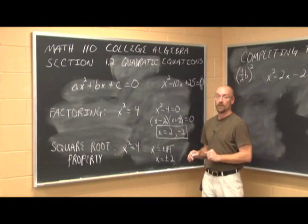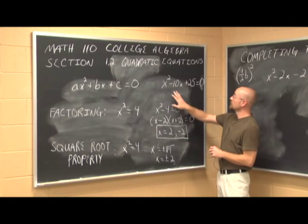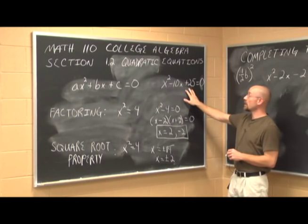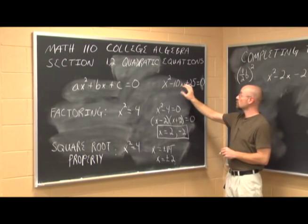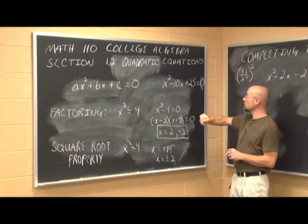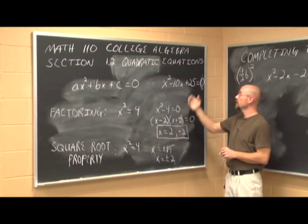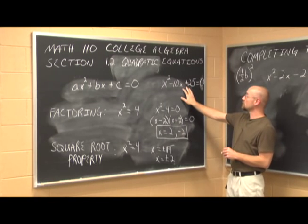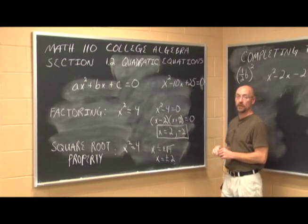Here's your quiz: this is a perfect square trinomial, which means it is a perfect square. What you can do is factor it to its perfect square, and then use the square root property to solve for x.